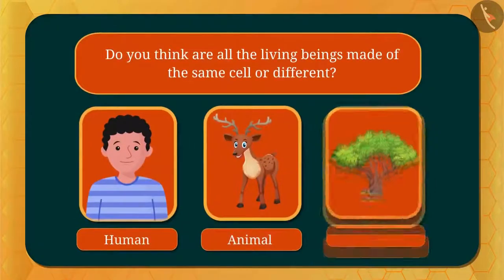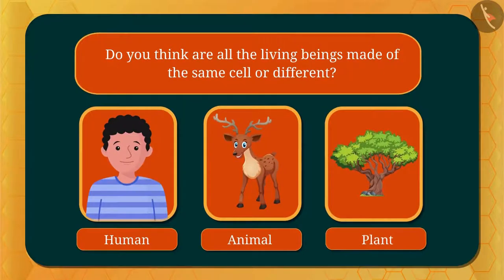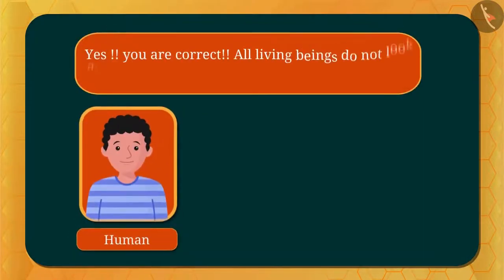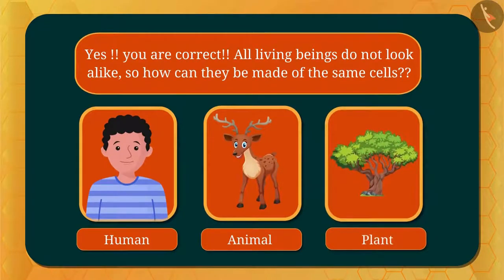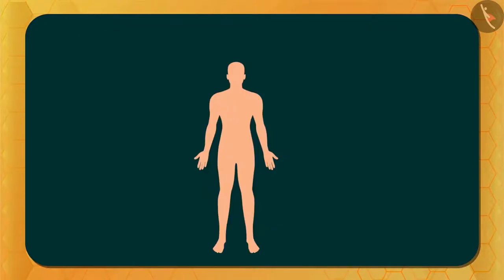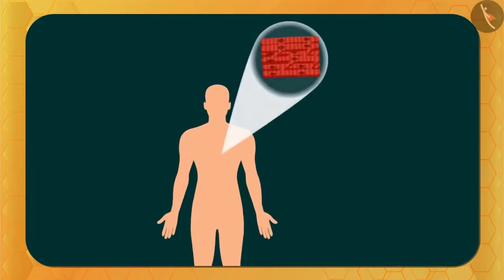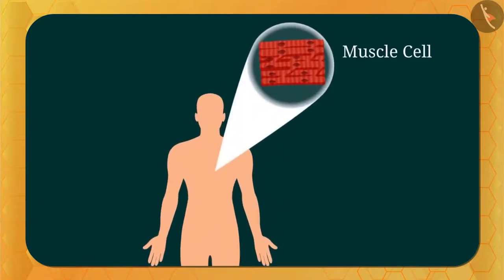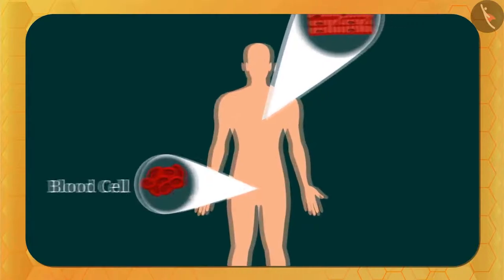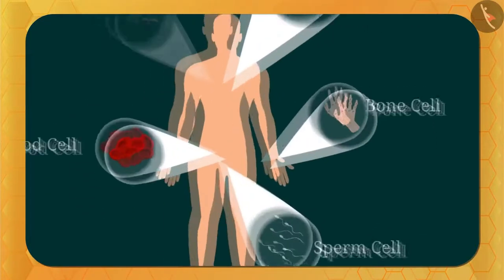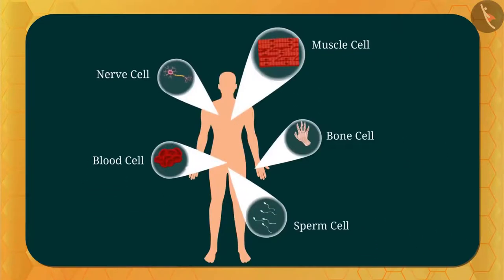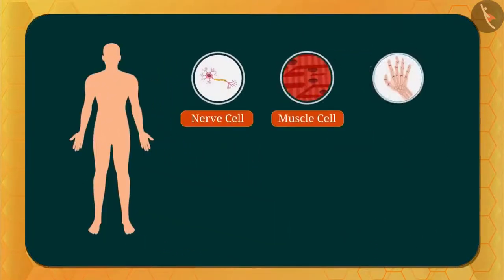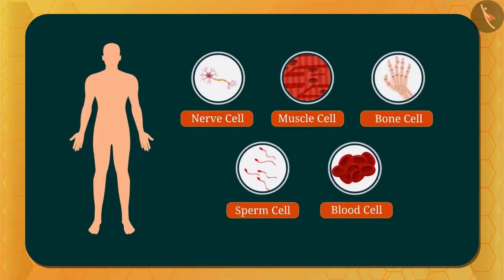Do you think all living beings are made of the same cell or different cells? All living beings do not look alike, so how can they be made of the same cells? Many types of cells are found in multicellular organisms like humans. For example, muscle cells have one type of structure, while blood cells, bone cells, sperm cells, and nerve cells are of different types. All cells are different, and the structure of a cell is according to its function.